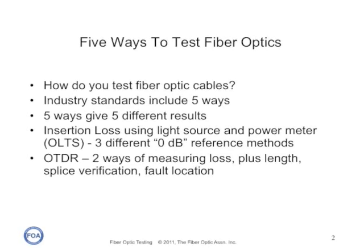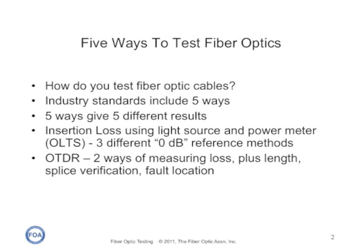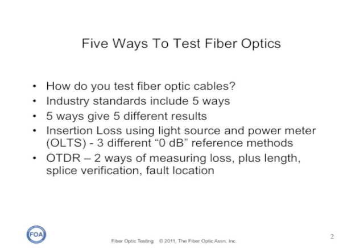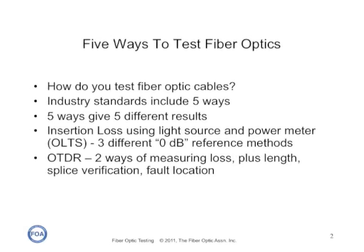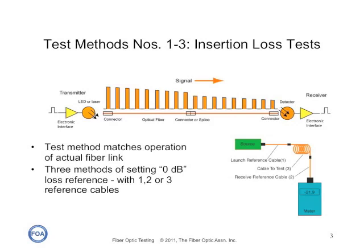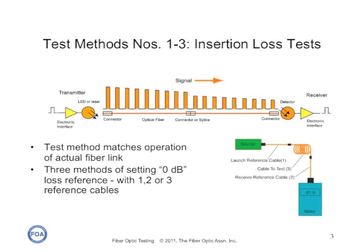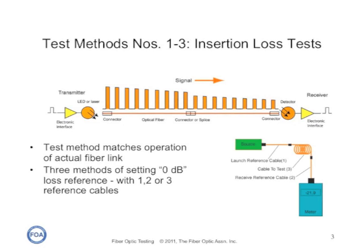There are two separate ways of using an OTDR to test the cable plant loss. The first three methods are insertion loss tests. Insertion loss tests use a light source and a power meter and test the cable plant very much the same way as a communication system uses the link.